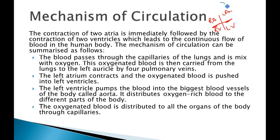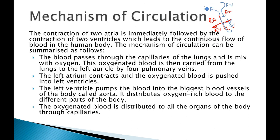The pulmonary vein brings oxygen-rich blood into the left atrium. The mitral valve opens and pushes the blood down into the left ventricle. From the left ventricle, the oxygenated blood goes out to the whole body.